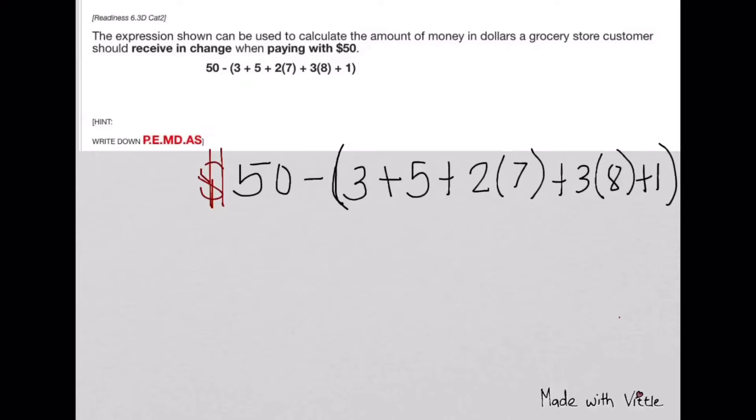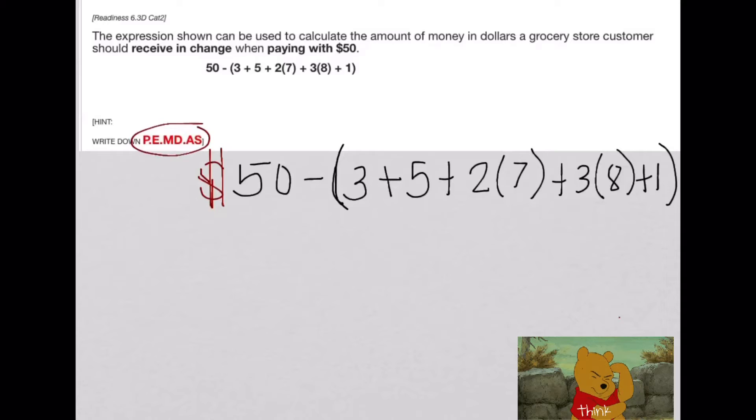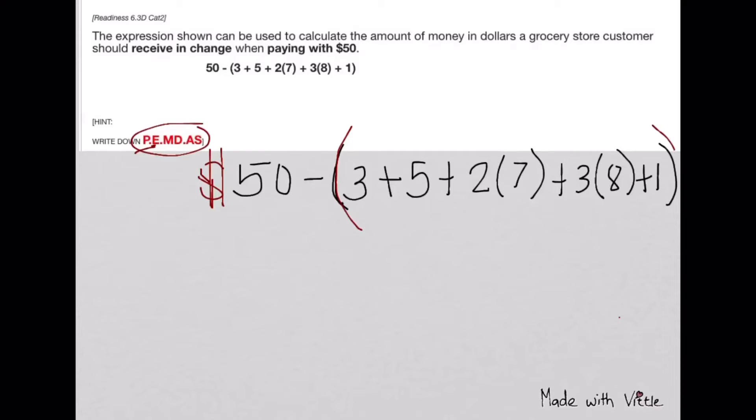The expression shown can be used to calculate the change when a grocery store customer pays with $50. The hint here is PEMDAS - we need to follow the order of operations. P stands for parenthesis, so everything inside the parenthesis should be done first. Then inside the parenthesis, you have to apply the rules again.